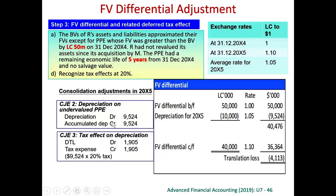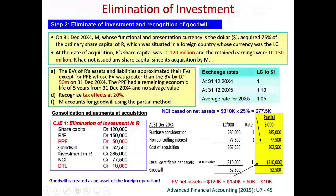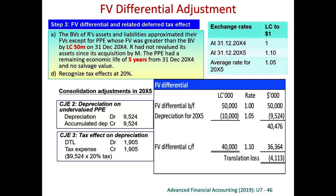Therefore, we debit additional depreciation based on the fair value adjustment and credit accumulated depreciation. Since there was a deferred tax liability when we recognized the PPE fair value increment, we now need to reverse part of it. Because we debit depreciation, we credit tax expense at 20% tax rate. Because we credit accumulated depreciation, we debit deferred tax liability at 20% tax rate. This is for additional depreciation on fair value adjustments.